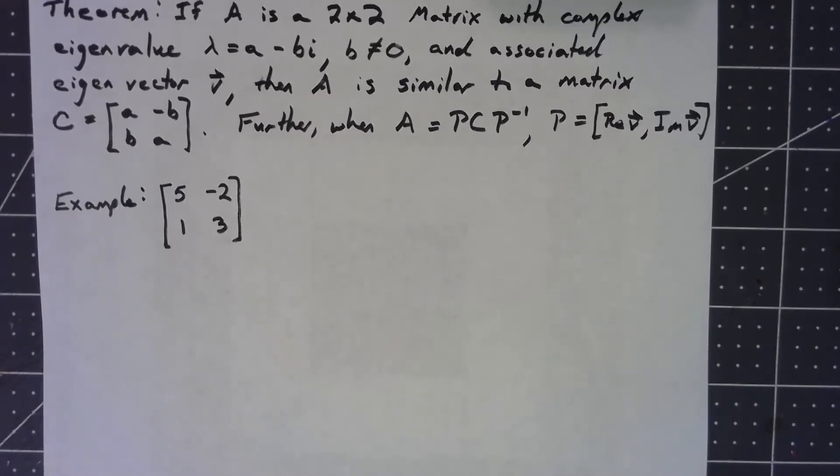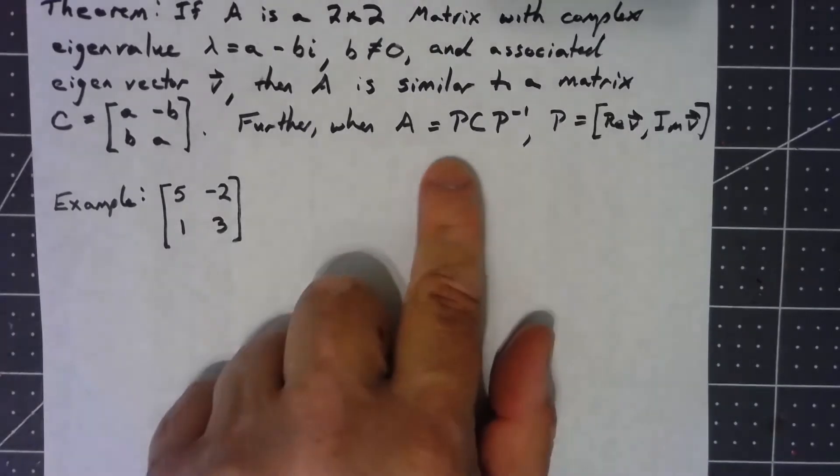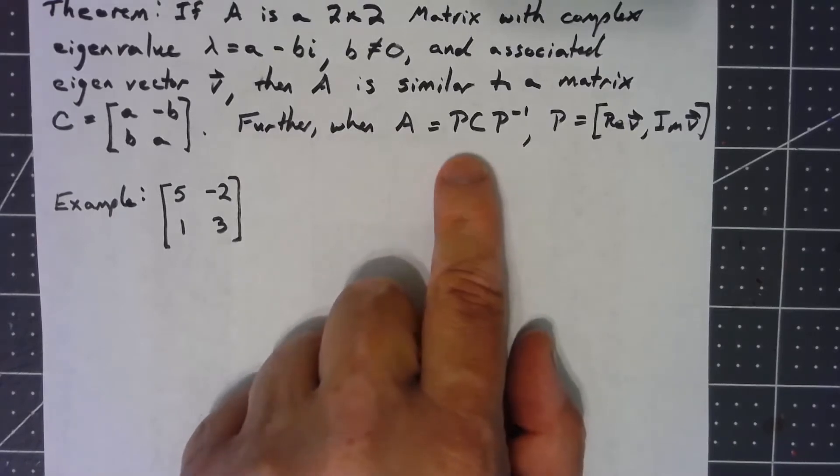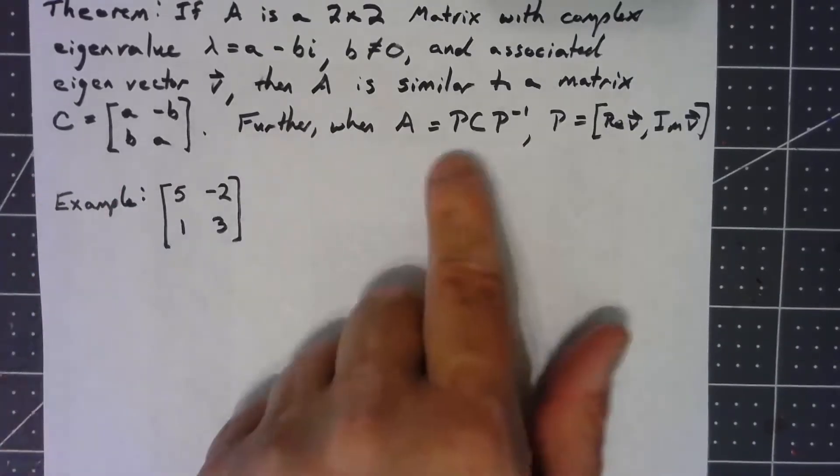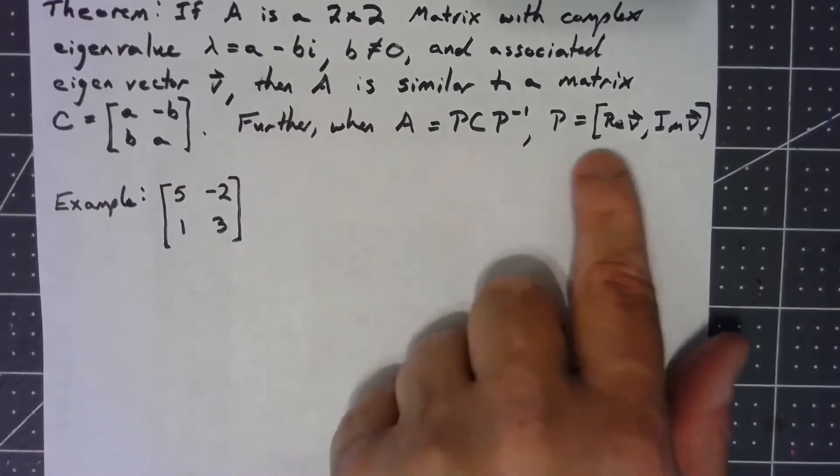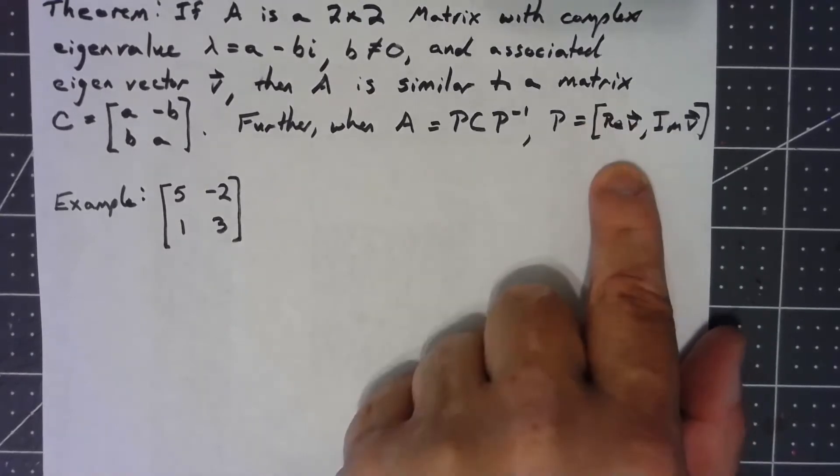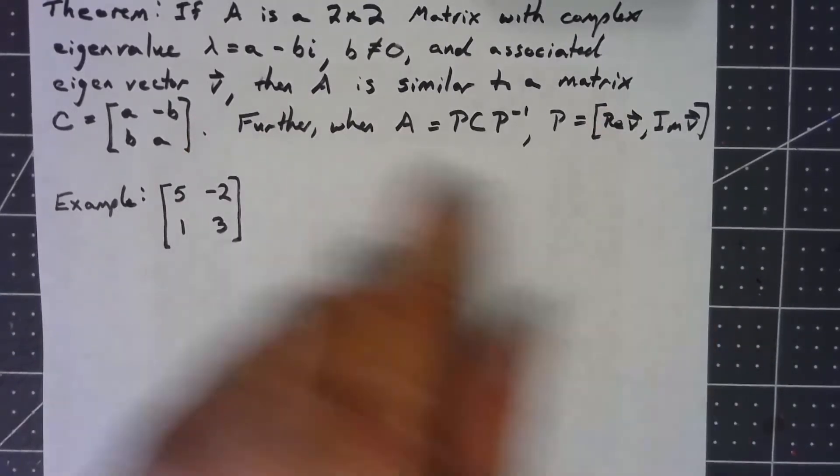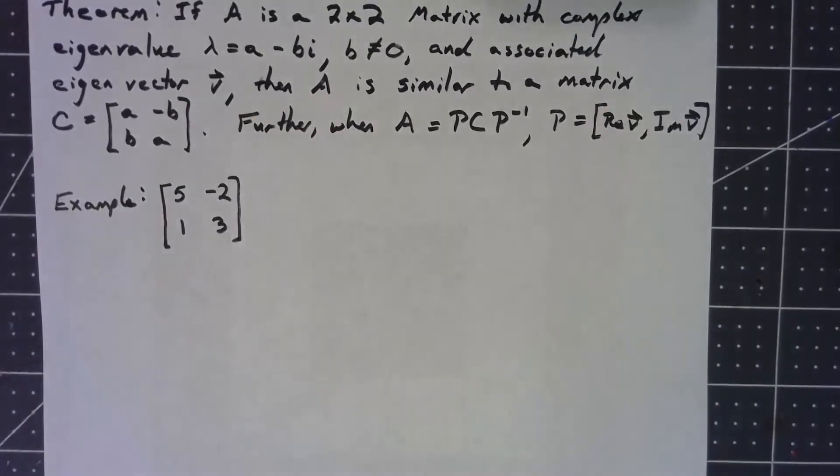So being similar to it in the linear algebra sense is an important thing, and further it's very easy to figure out how to make that similarity happen. A has to be PCP inverse, of course that's what similarity means. But the first column is the real part of the eigenvector, the second column is the imaginary part of the eigenvector.